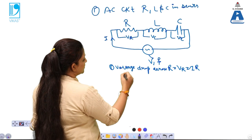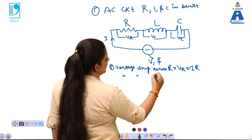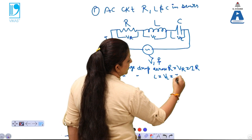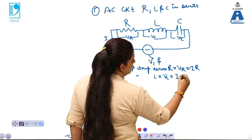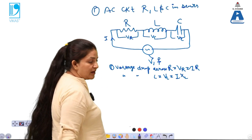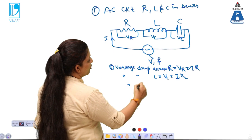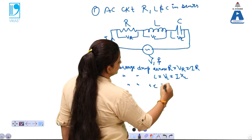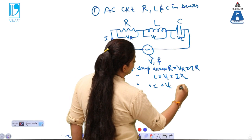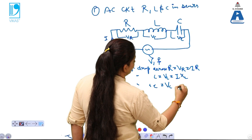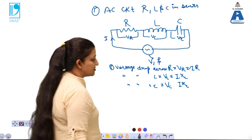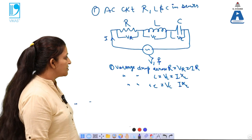The voltage drop across L is given by VL which equals I into XL. Next, the voltage drop across C equals VC equals I into XC. This is the voltage drop across capacitance.